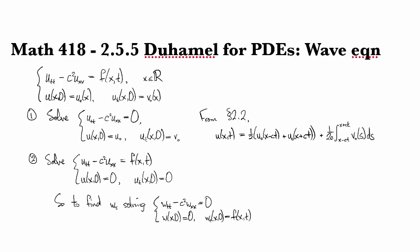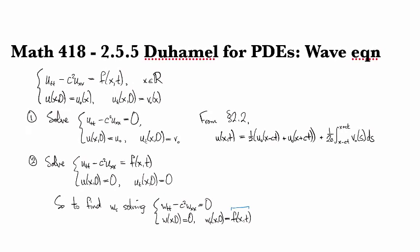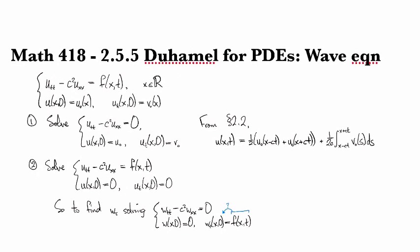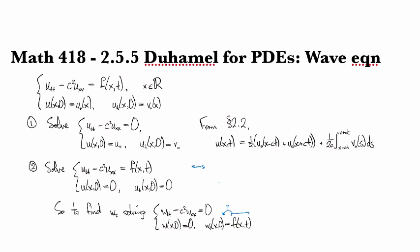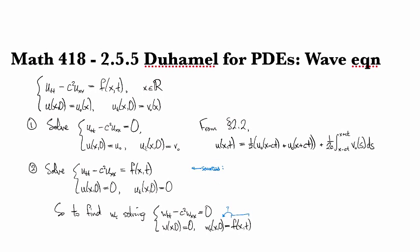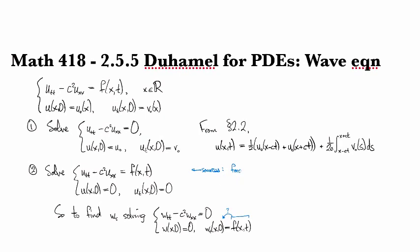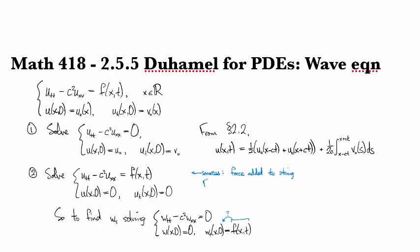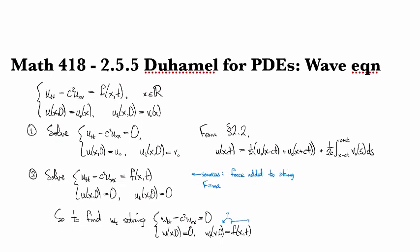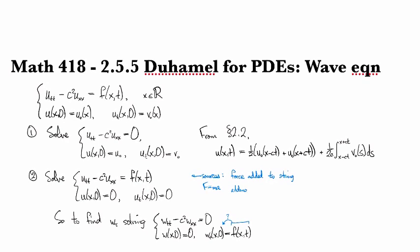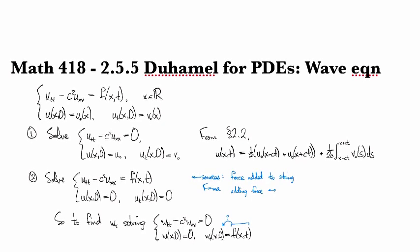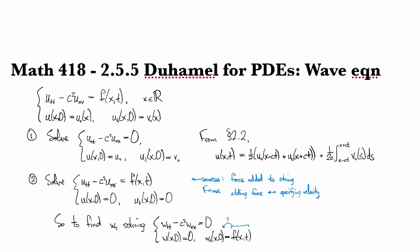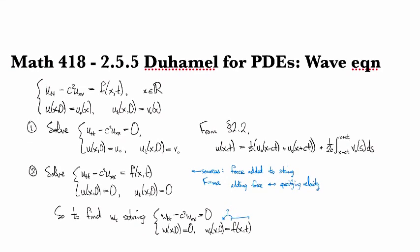That's the first step. And if you're wondering, why is it that we attached f here to the time derivative? Well, recall that when we're looking at sources like this, the thing to keep in mind is that this is force added to the string. And force is f equals ma. So it's coming in like acceleration. So in other words, what I'm saying is that adding force corresponds to specifying velocity.